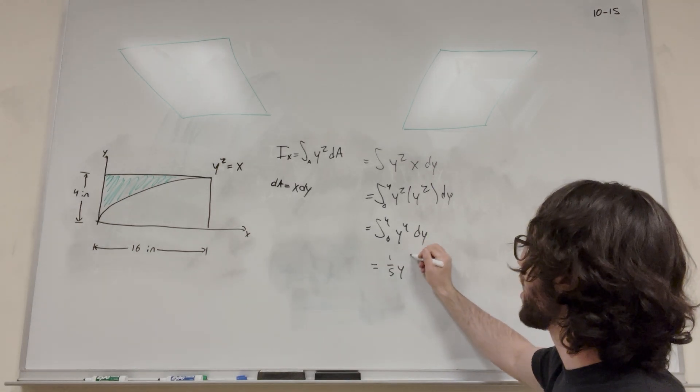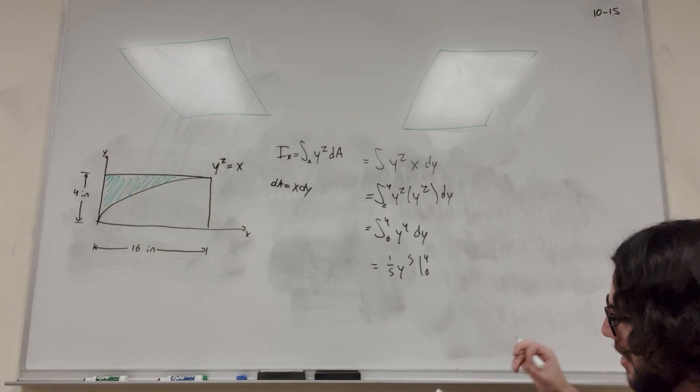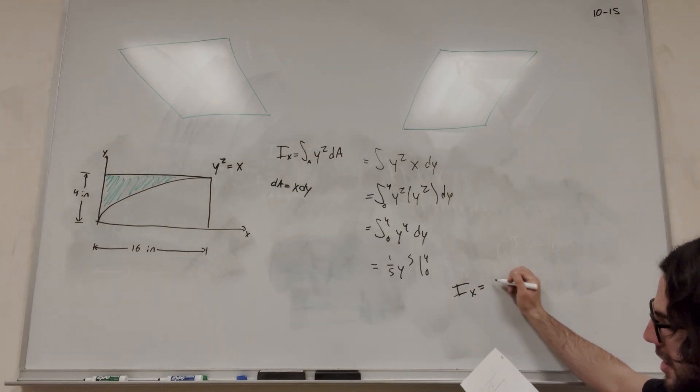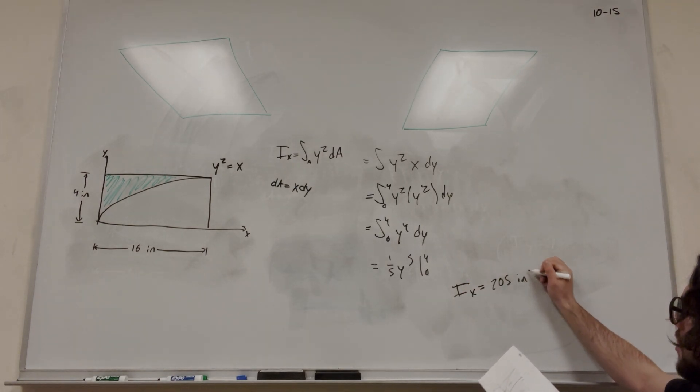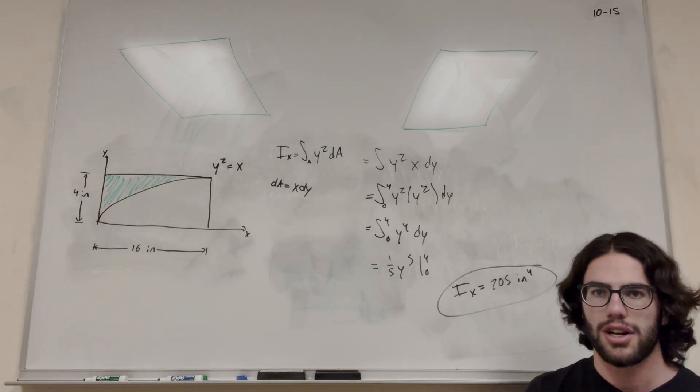Integrate this, so it's 1 over 5, y to the 5th, from 0 to 4. Plug this in, and you get that I of x is equal to 205 inches to the 4th. Make sure you get your units right.